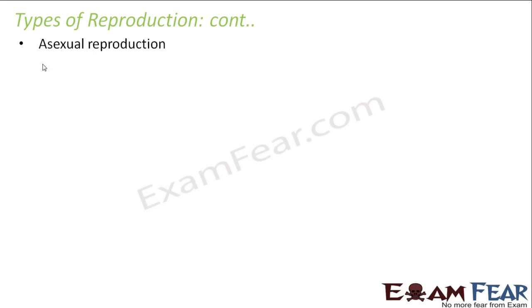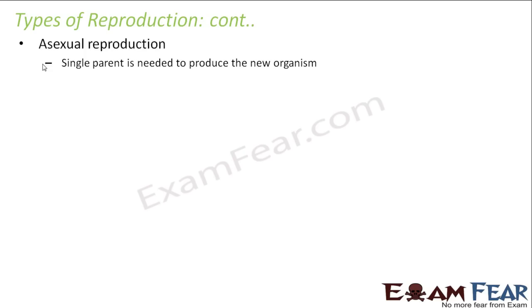First we will talk about asexual reproduction. What is asexual reproduction? A single parent is needed to produce the new organism. You do not need two parents — for example, in human beings we need a father as well as a mother to produce a new baby. But in asexual reproduction, just one parent is needed to give birth to a new organism.